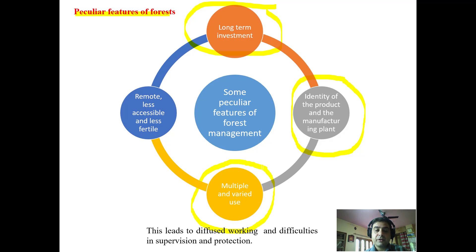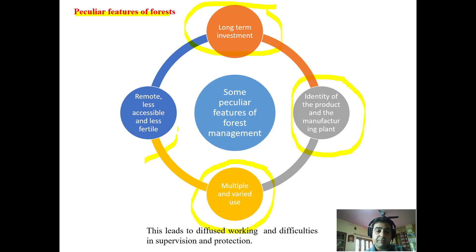The third peculiar feature is multiple and varied land use. Forests provide us timber and minor forest produce. In addition, forests have different uses including climatic amelioration, soil amelioration, biodiversity, providing oxygen, providing habitat for glaciers and snow which form the source of perennial water, and many other things. So forests don't have a single use but have multiple uses.